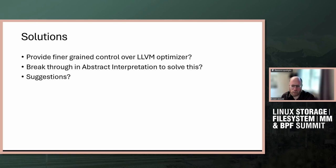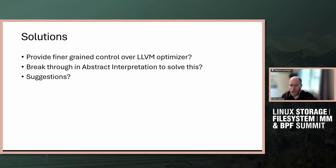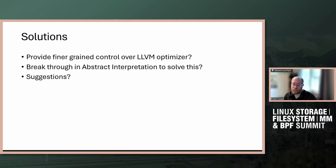Possible workarounds or solutions we've evaluated: could we provide fine-grained control of the optimization to LLVM? Today, LLVM doesn't expose any flags or ability for us to say don't form this particular optimization. The other possible approach might be if some researchers in abstract interpretation have a way to resolve this, we might be able to adopt that to the prevail verifier. Beyond that, I'm open to any other suggestions.